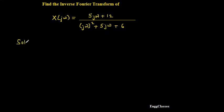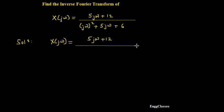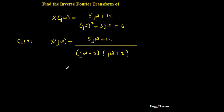So let's start with the solution. X(jω) equals the numerator 5jω + 12, divided by the denominator written in factored form: (jω + 3)(jω + 2). This is now in factored form.